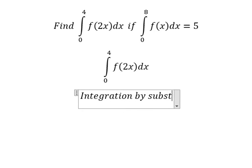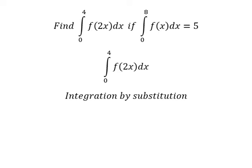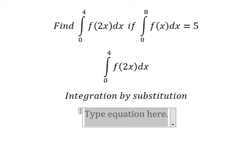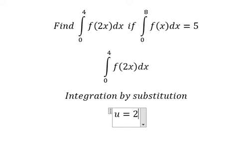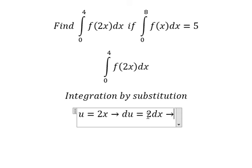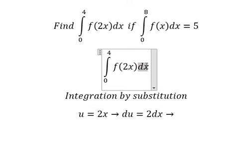I will put u equals to 2x. Later, we need to do the first derivative for both sides, and we have like this. Because we don't have number two next to dx, so we divide both sides by number two.